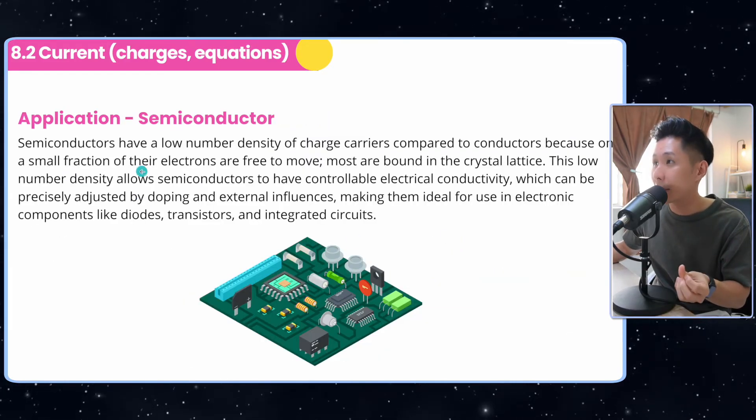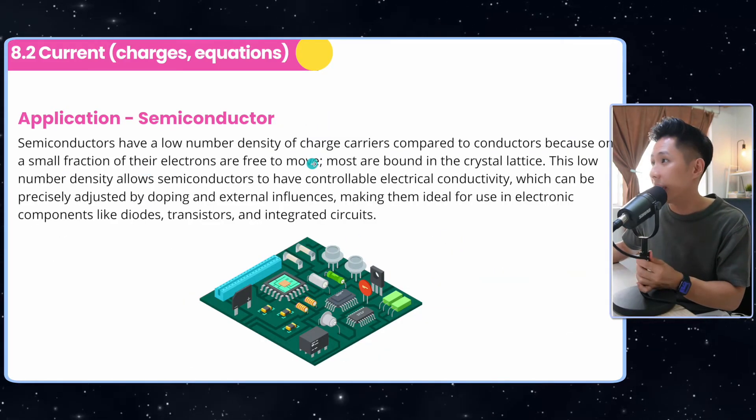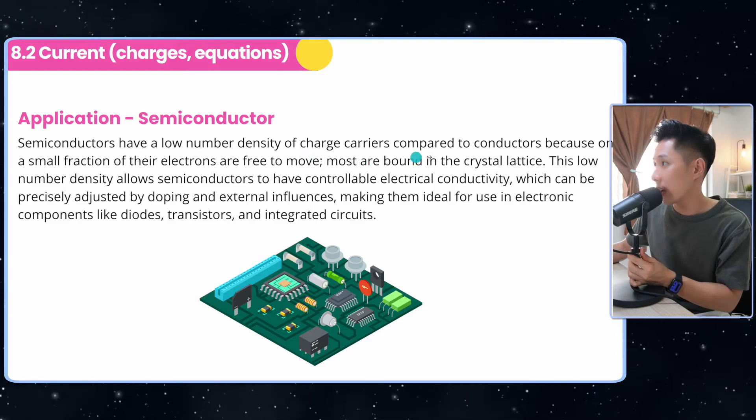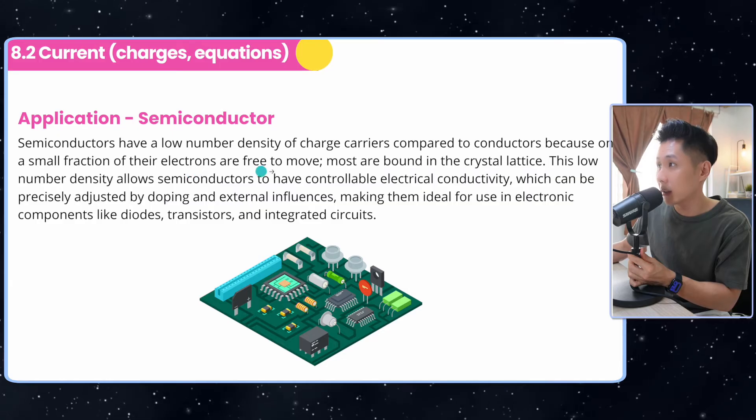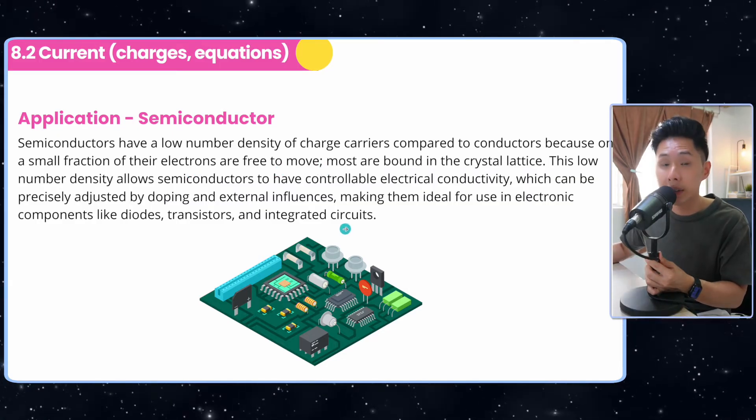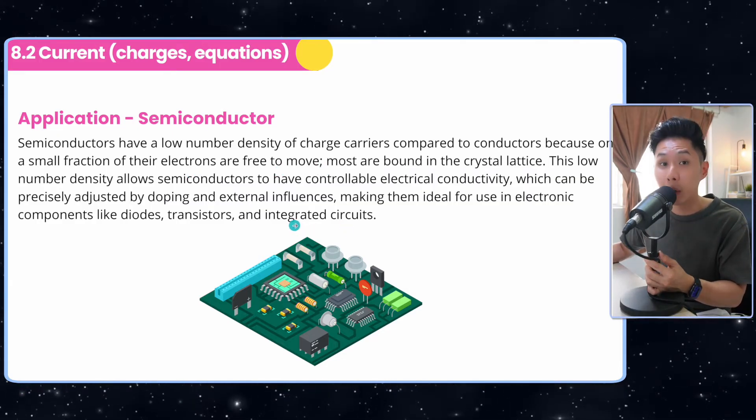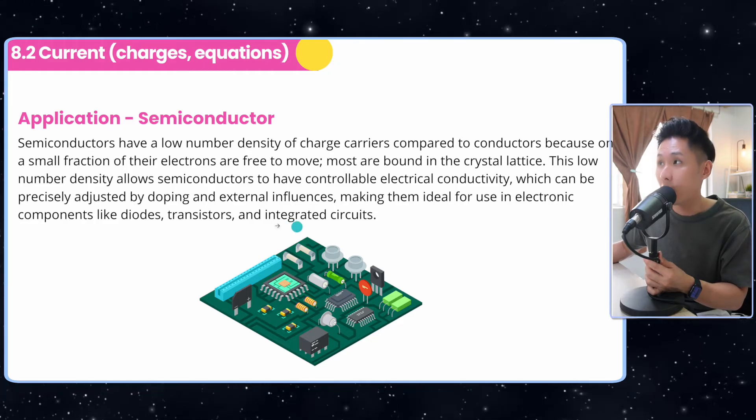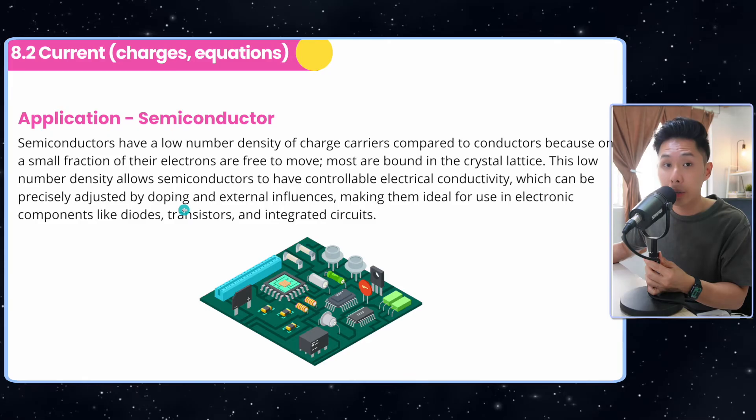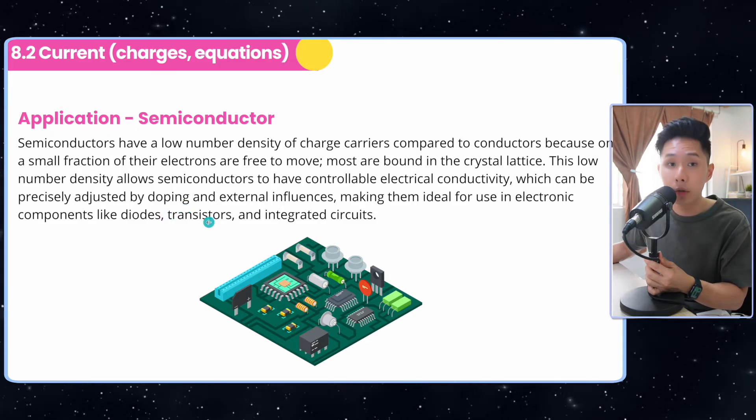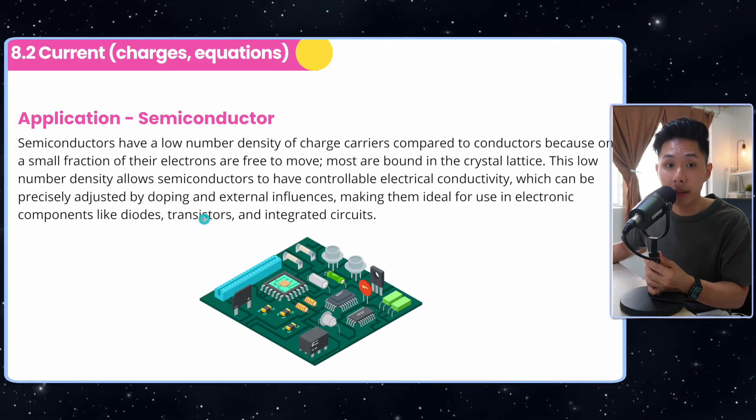So here's an application of semiconductors. They have low number of density charge carrier compared to conductors because only a small fraction of their electrons are free to move. So if you learn computer science, you will know that computer science work by zero and one. And with semiconductor, what it's saying here is that it allows the voltage to be controlled, and therefore they are able to represent binary in computer science.